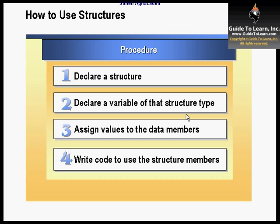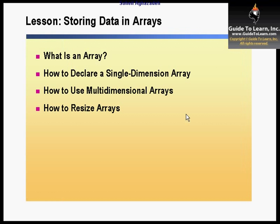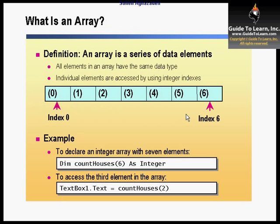There's a practice which allows you to go and work with structures. Now let's talk about arrays. An array is a series of data elements that share the same type. All elements in an array have the exact same data type, and the individual elements are accessed by using an integer index. Every single array member in .NET is zero-based. In VB 6.0 you could set the array membership from 1 using 'Option Base 1,' but there's no more support for that — everything is zero-based in VB.NET.